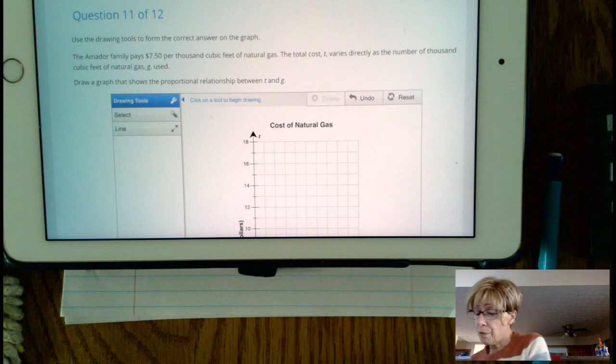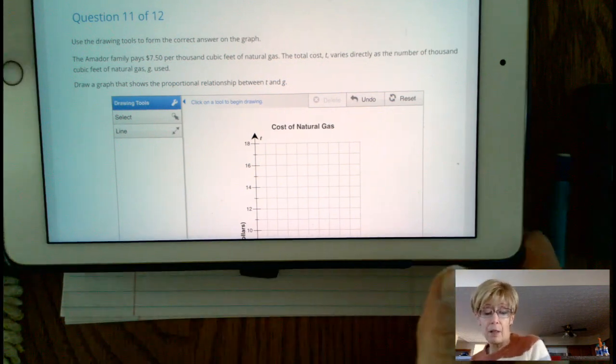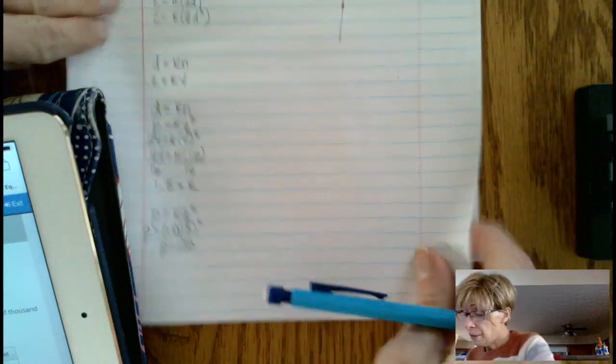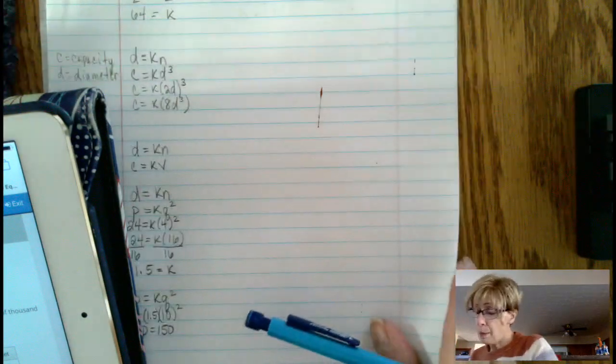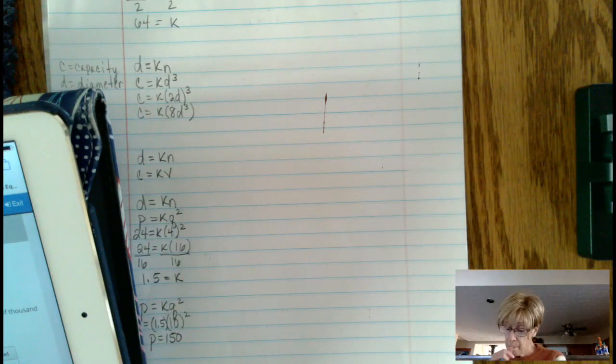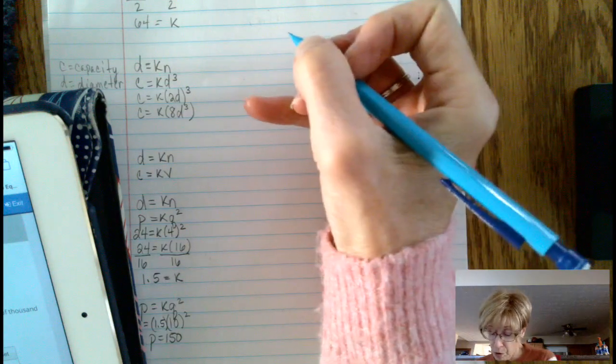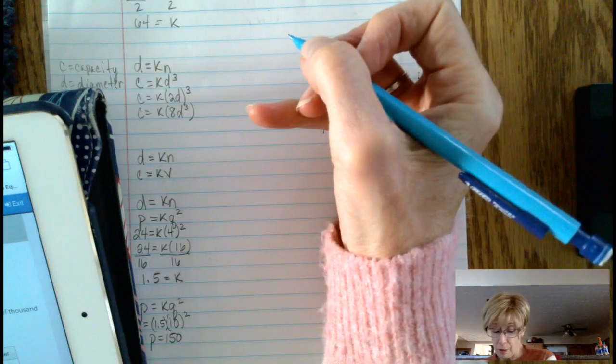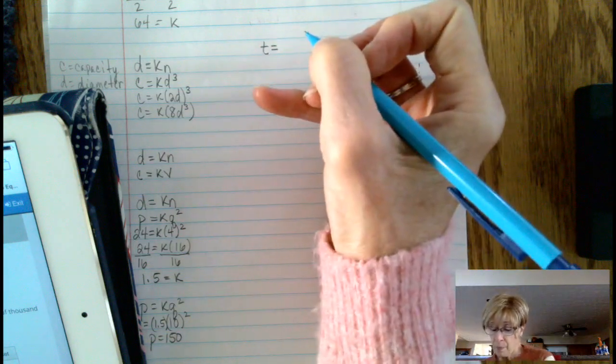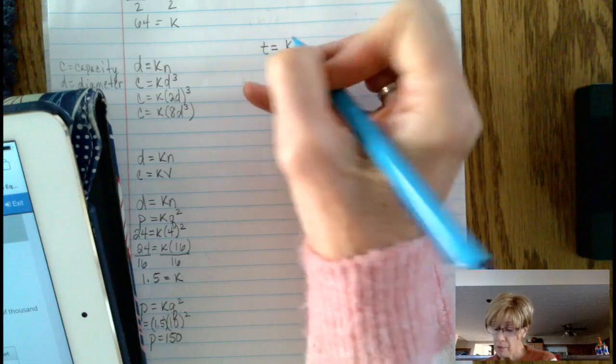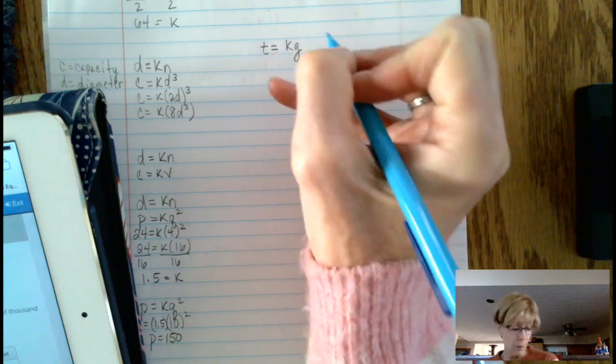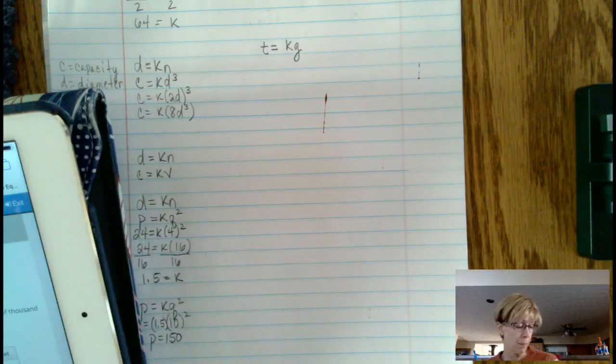Just a little bit of background information on this. The total cost, which for whatever reason they used T instead of C, the total cost varies directly as the number of 1,000 cubic feet of gas. So there's the direct variation formula for this particular problem.